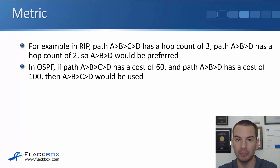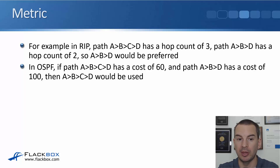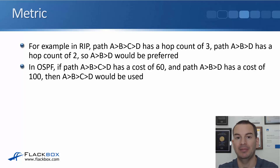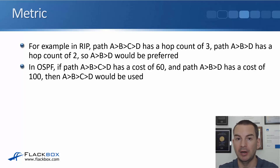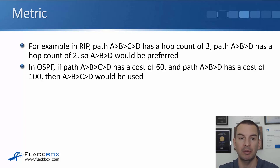So in this example, ABD would be preferred. Now we might have exactly the same network topology but using OSPF. With OSPF, maybe path ABCD has got a cost of 60, and path ABD has got a cost of 100 because the ABD path has lower bandwidth links. OSPF takes bandwidth into account by default, and the lowest value is preferred. So with OSPF, it would be path ABCD that would make it into the routing table.